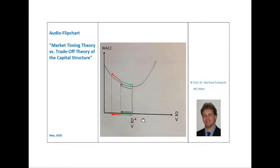As we go to the right, we are increasing the financial leverage. The optimal capital structure is the one that gives the highest business value. As the business value is determined by discounting the free cash flows and the terminal value with the weighted average cost of capital, short WACC, the optimal capital structure is also the capital structure that provides the smallest WACC. On this flipchart, we see the weighted average cost of capital on the vertical axis.